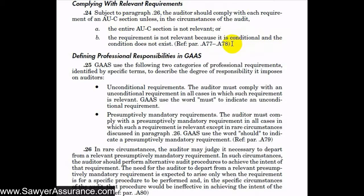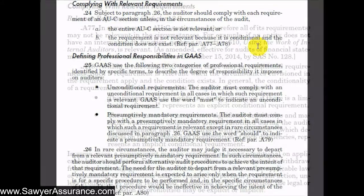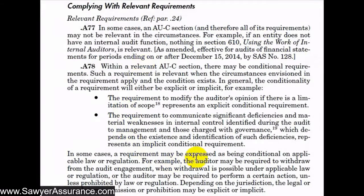So what exactly does that mean? Let's go to the explanatory materials section for some more color. There are two cases where a requirement may not apply. The first is where the AU-C section may not apply at all. For example, if the entity being audited doesn't have an internal audit function, then we would not need to apply section 610, using the work of internal auditors, because the entire section would not be relevant.